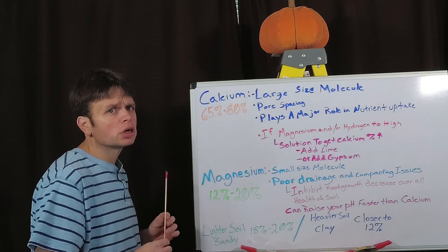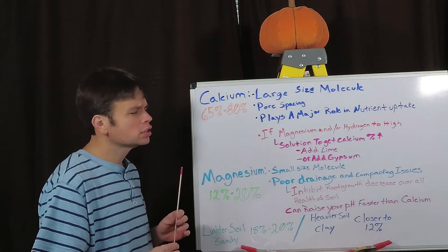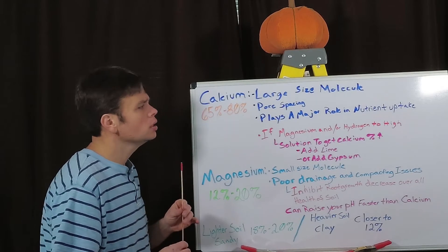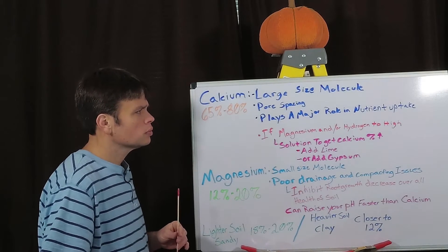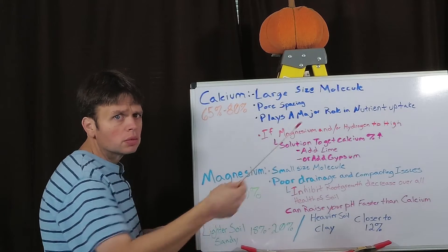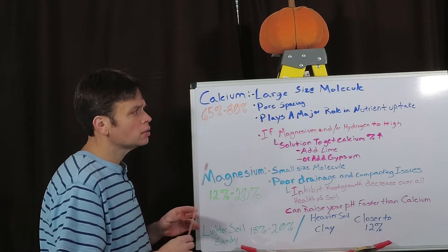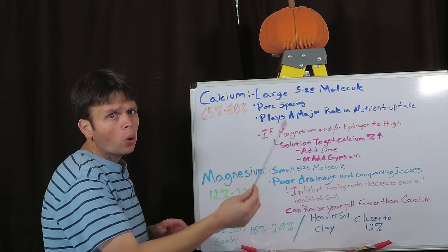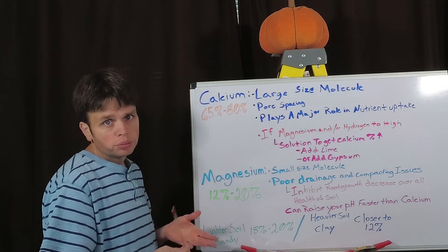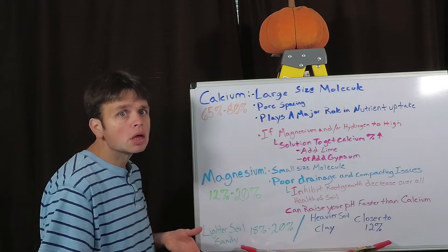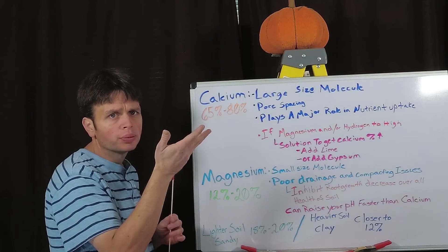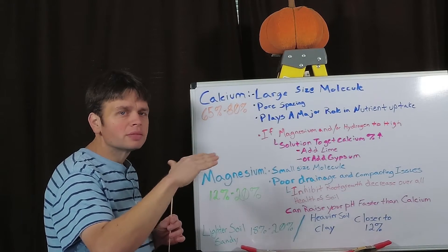Now if your percentages aren't quite up to 65 percent, it's going to be because of two elements, whether it can be one of them or possibly both, which is possible. And those two elements are magnesium and hydrogen. So there's two ways we can tackle this. One is if one or both of these are out of their range and they're too high, we can work on decreasing those numbers. Or we can add lime or gypsum. If your pH is pretty high already and you're worried about increasing the pH even more, instead of adding lime you can add gypsum, and then it'll help bring up your calcium percentages while not raising your pH.